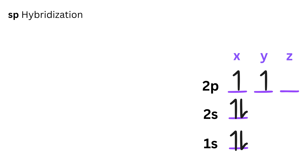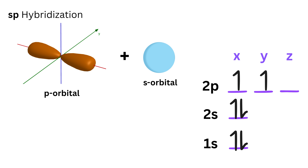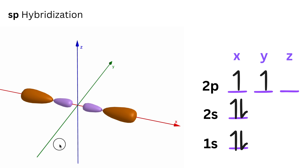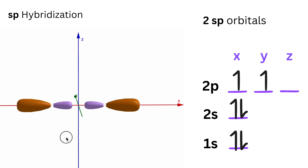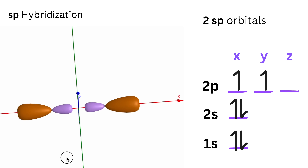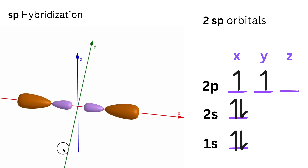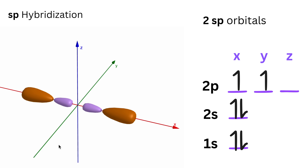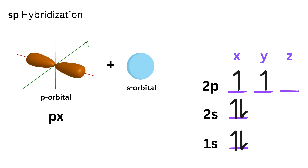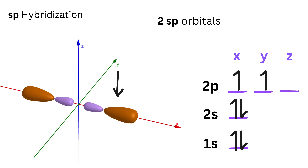Now let us first understand sp hybridization. When we say an atom has sp hybrid orbitals, we mean one s orbital and one subshell of the p orbital — which can be one of the px, py, or pz — have been mixed together. This mixing produces two new identical hybrid orbitals called the two sp orbitals. They always point in exactly opposite directions, making a straight line — 180 degrees apart.